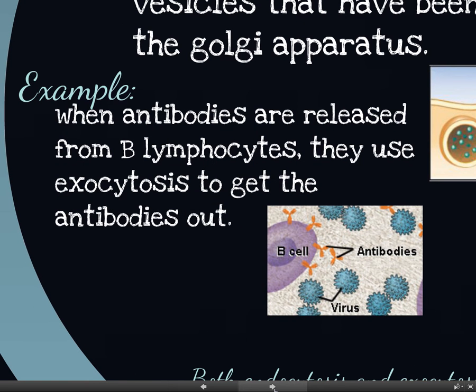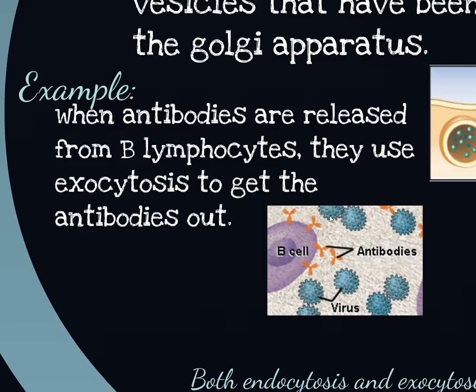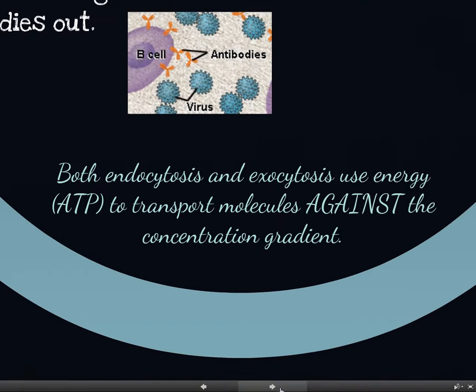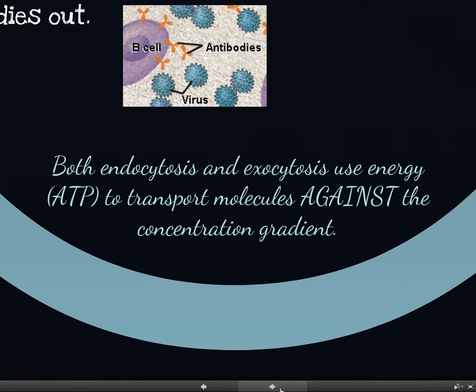When antibodies are released from B lymphocytes, they use exocytosis to get the antibodies out — that's how B cells secrete antibodies. Antibodies are essentially proteins, made from protein chains, and they travel via that secretory pathway. The protein is synthesized by a ribosome on the surface of the endoplasmic reticulum, buds off as a vesicle, goes to the Golgi where it's packaged and modified, then buds out as a vesicle again, travels to the surface, and is exocytosed. Both endocytosis and exocytosis use energy in the form of ATP to transport molecules, so they are a type of active transport.